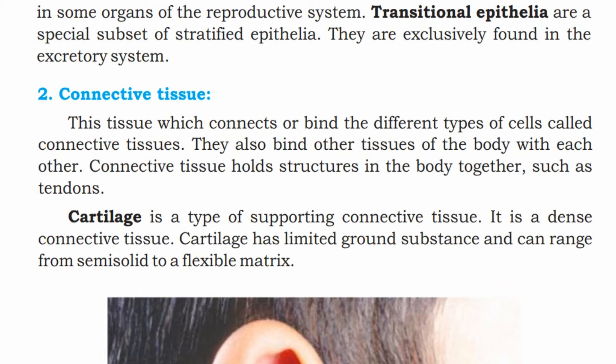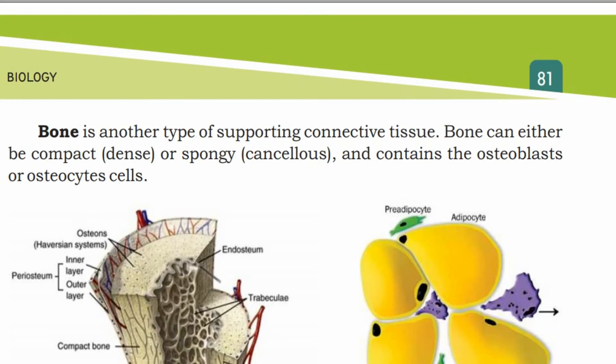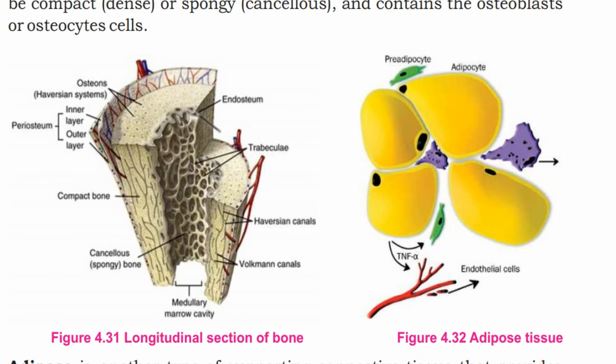Bone is another type of supporting connective tissue. Bone can either be compact and dense or spongy, and it contains osteoblast or osteocyte cells. This is a longitudinal section of bone showing the bone tissue.